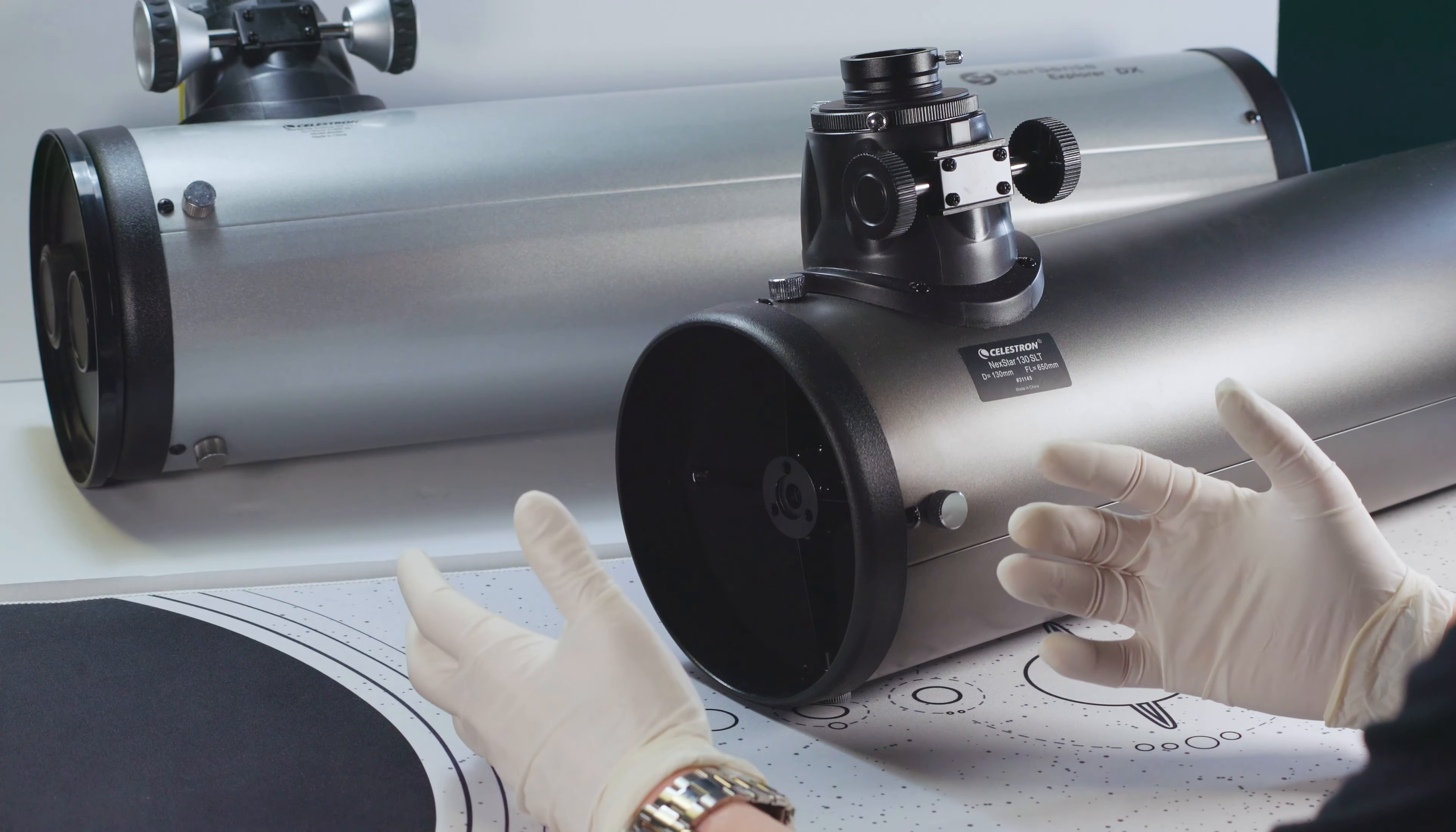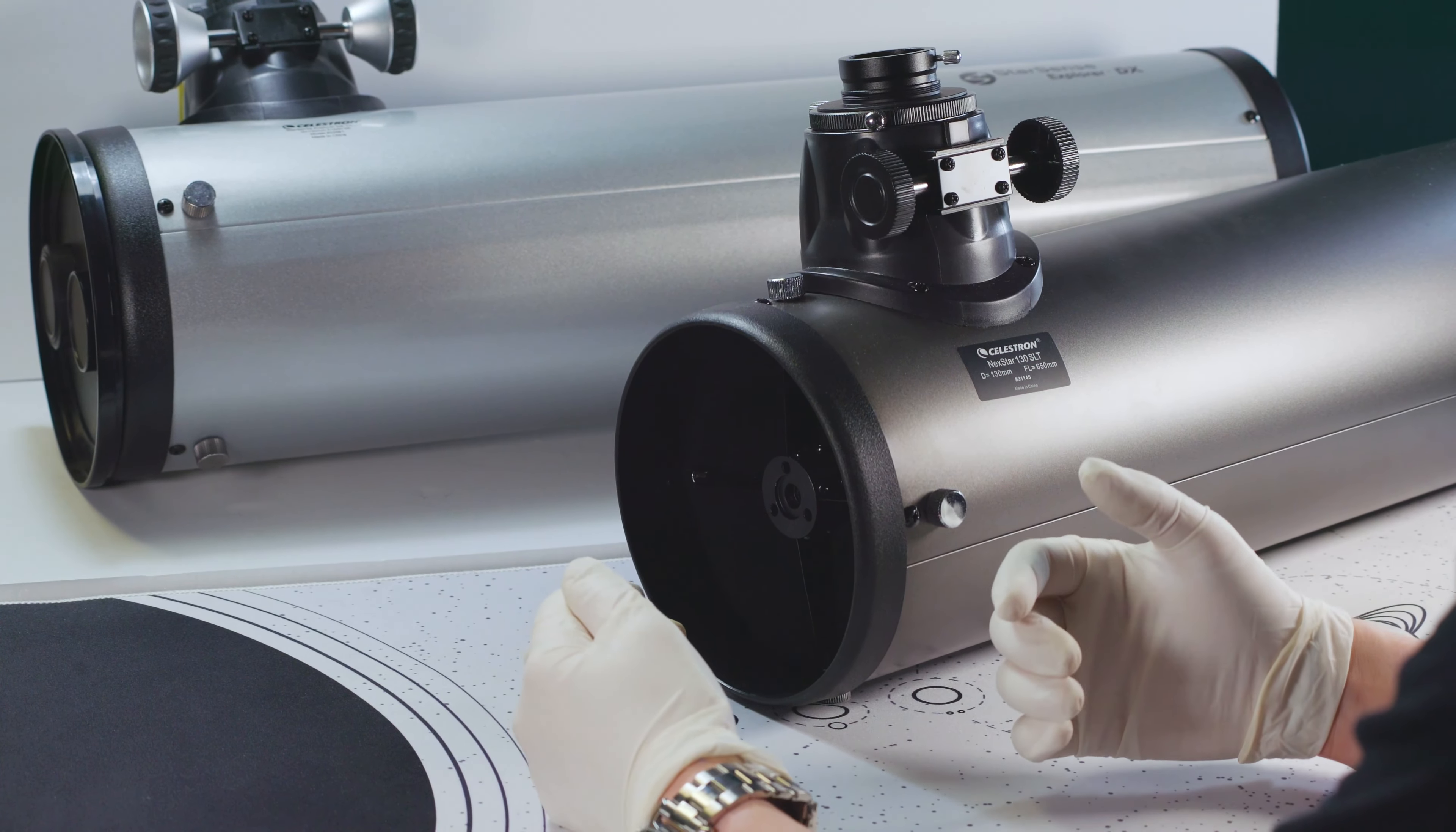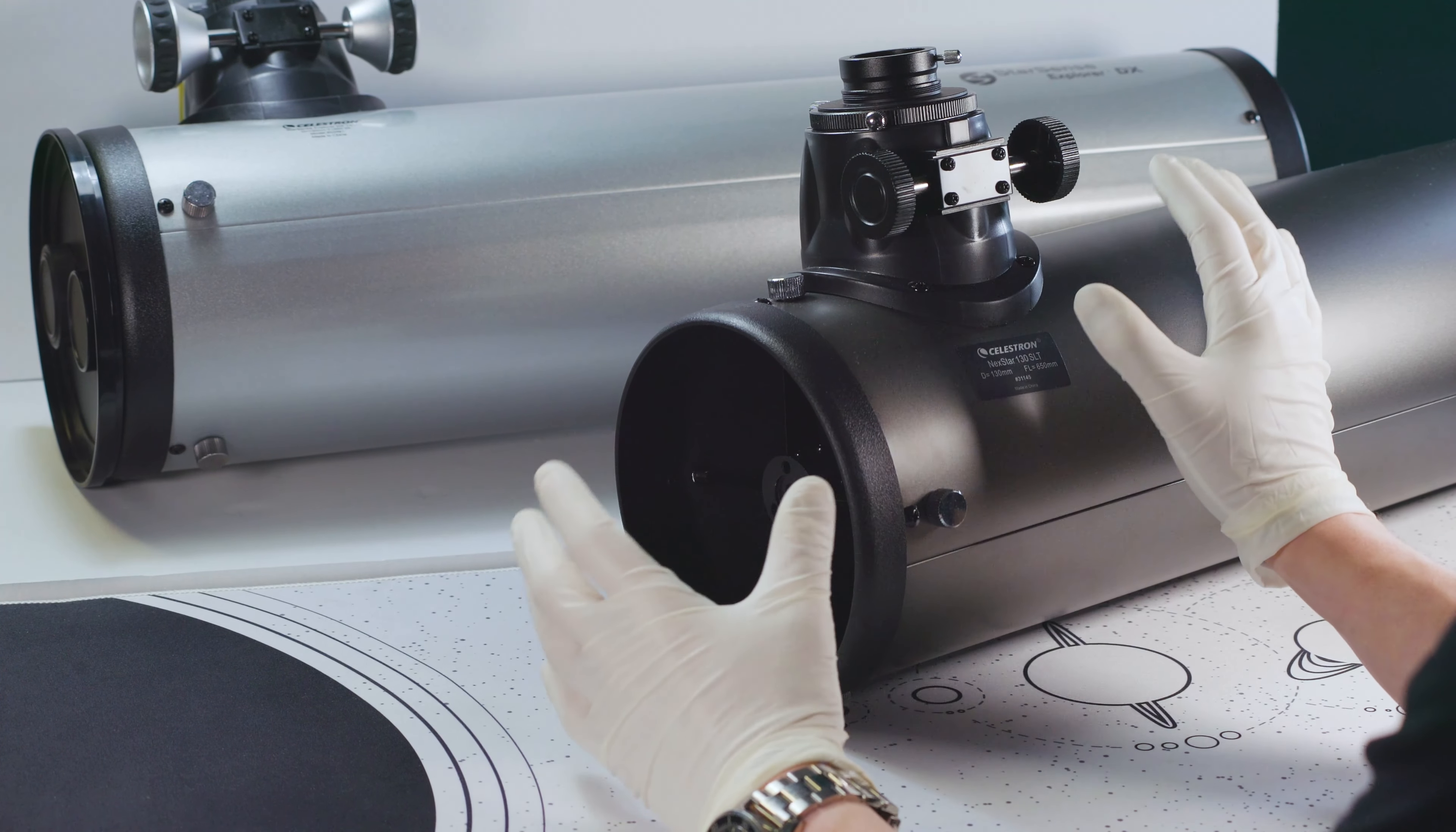So maybe you've purchased this upgrade kit or are just interested in it, and you're wondering what exactly do these upgraded knobs do for me on a scope like the 130 SLT or DX-130. As you may or may not be aware, these scopes, which are Newtonian design, have two mirrors, one at the back and one secondary up front, that you need to align in conjunction with this focuser to get the best performance out of the scope.